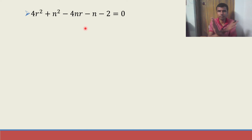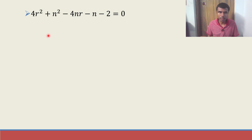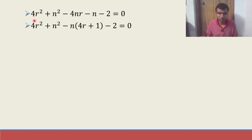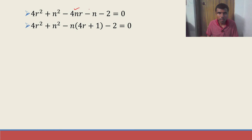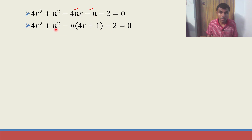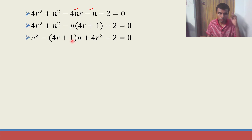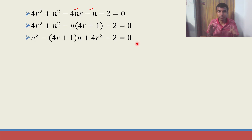Now rearranging: we have 4r² − 4nr + n² − n − 2 = 0. Taking −n common from the middle terms: n² − n(4r+1) + 4r² − 2 = 0. This is exactly what was asked to prove. Hence proved!